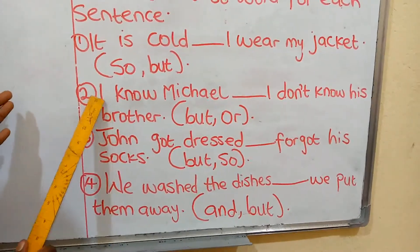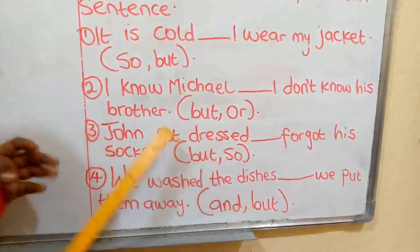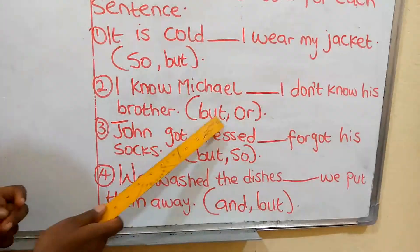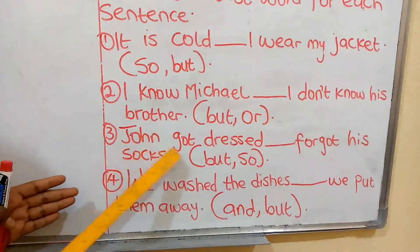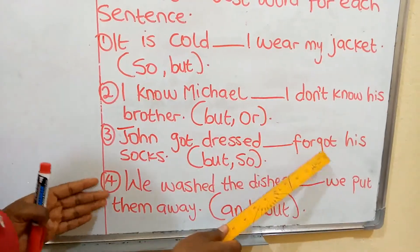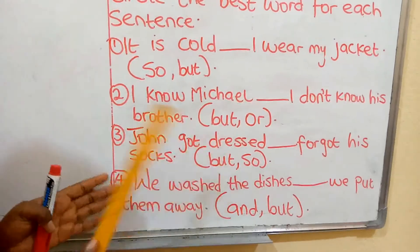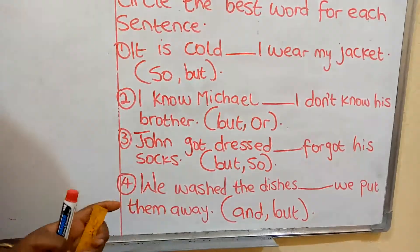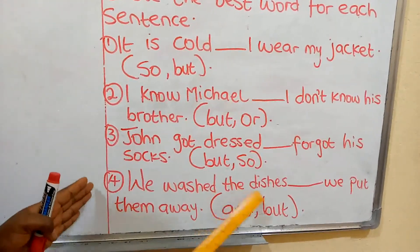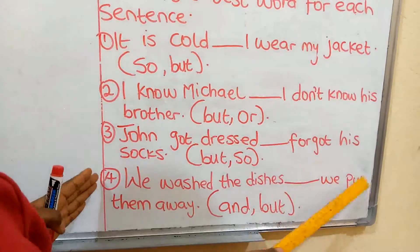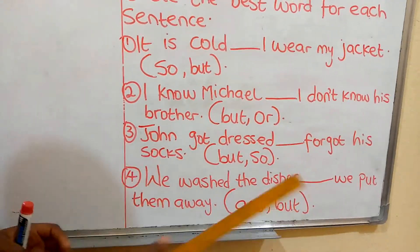Number two: 'I know Michael — I don't know his brother.' In brackets we have 'but', 'and', and 'or'. Number three: 'John got dressed — forgot his socks.' In brackets we have 'but', 'and', and 'so'. Number four: 'We washed the dishes — we put them away.' In brackets we have 'and' and 'but'.